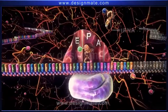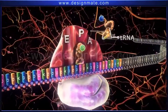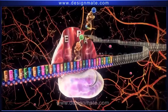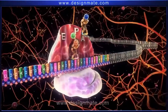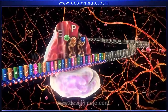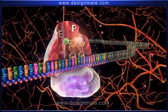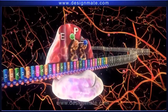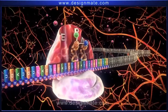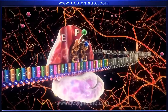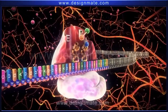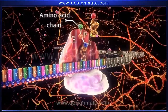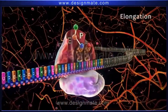Meanwhile, another tRNA-carrying amino acid molecule attaches to the A site. This is followed by the binding of the amino acid molecules. Repetition of this process leads to the formation of an amino acid chain. This event is called elongation.